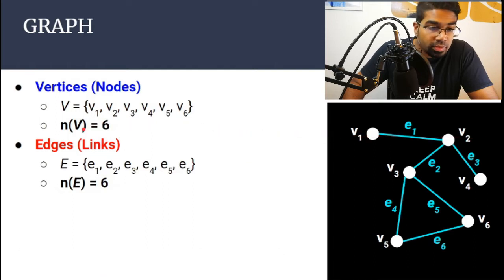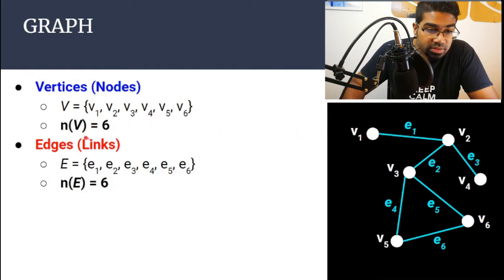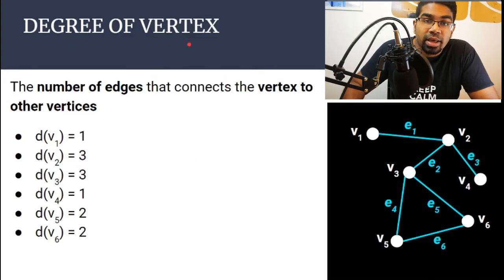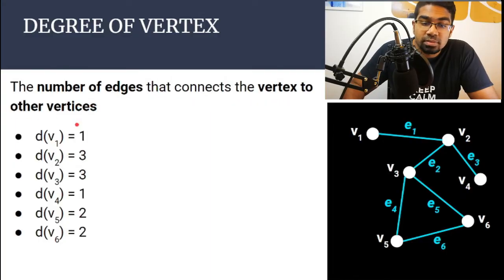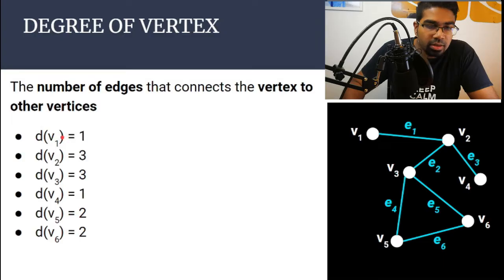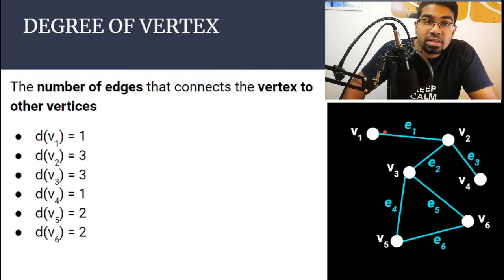Now, there are many different types of graphs. Of course, the number of vertices is not necessarily the same as the number of edges, as we will see. The degree of a vertex is the number of edges that connects a vertex to other vertices. For example, let's look at d(V1) — d(V1) means the degree of V1, so the degree of this vertex.